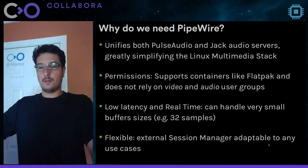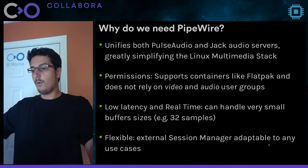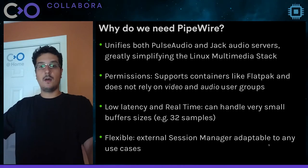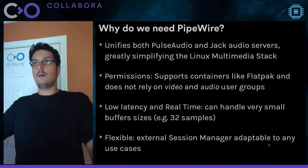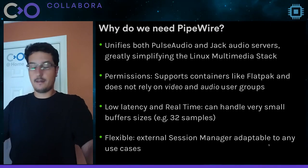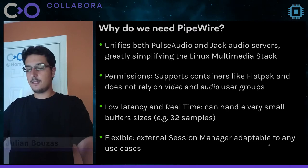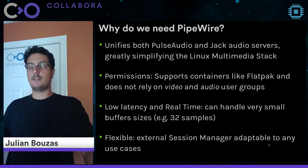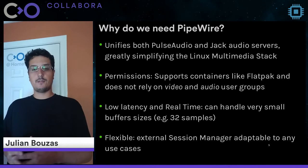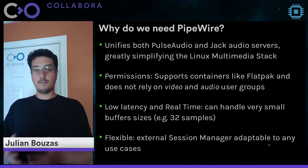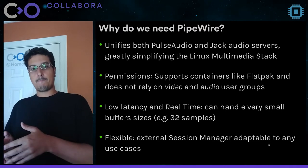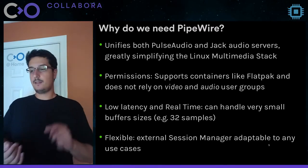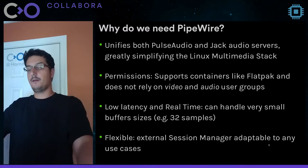The third point PipeWire addresses is low latency. PipeWire is low-latency and real-time capable, and it can handle very small buffer sizes of up to 32 samples, which is only one or two milliseconds of latency — something not even JACK can achieve. And last but not least, there is flexibility. PipeWire is very flexible because it exposes an API for users to write their own session manager and tell PipeWire how to behave based on different use cases. So we have simplicity, security, performance, and flexibility.